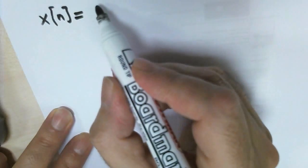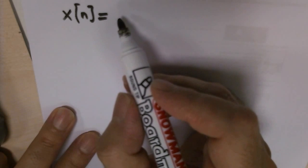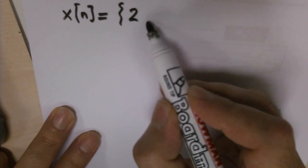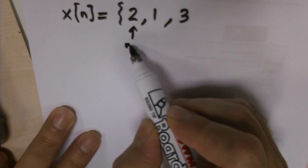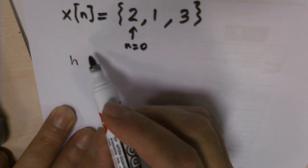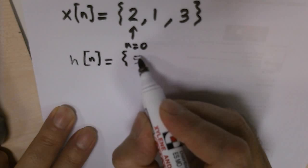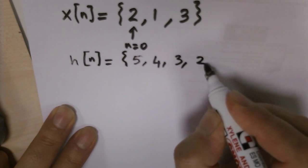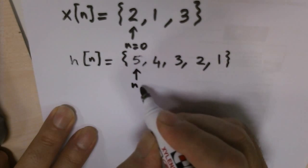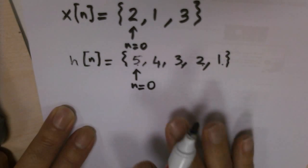Circular convolution example. Let's assume that X[n] is equal to {2, 1, 3}, let's assume this is starting point, and let's consider the following impulse response or H[n]: {5, 4, 3, 2, 1}.